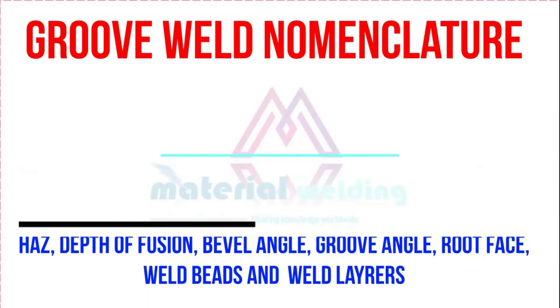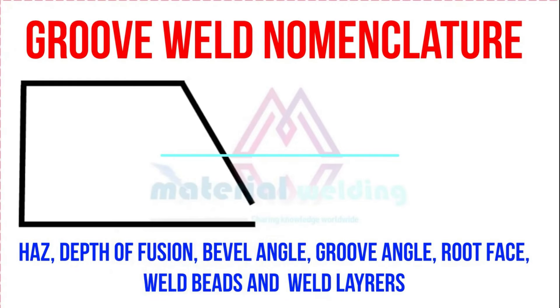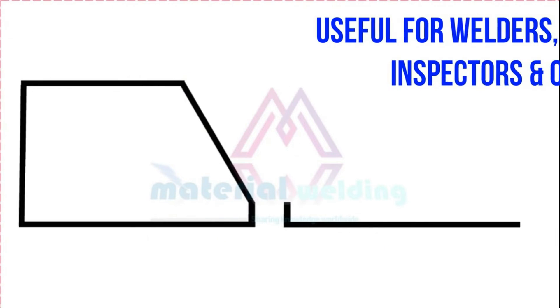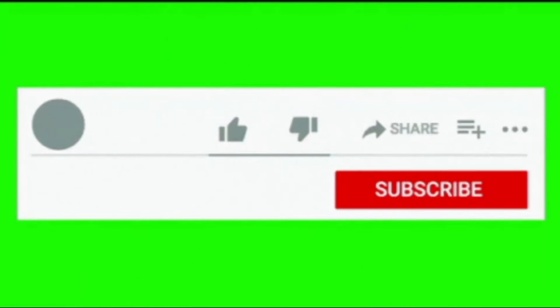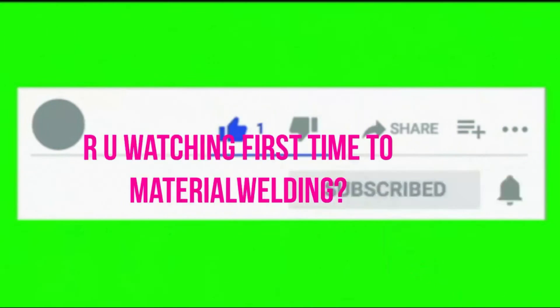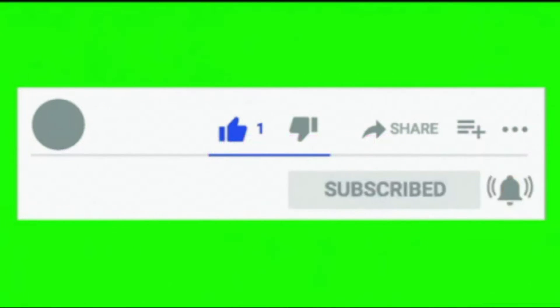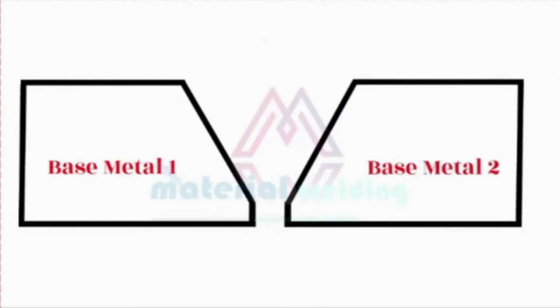In this video, we will learn the nomenclature of a groove weld, what is HAZ, weld bead, welding layer, and other parts of a groove weld joint. This is very important for every welder, fitter, and QAQC engineer. Before we start, if this is the first time you are watching my video, please subscribe to my YouTube channel to get regular updates for new videos. Also, like and share this video to support this work.